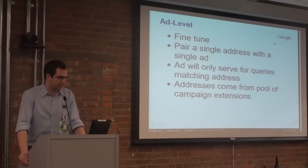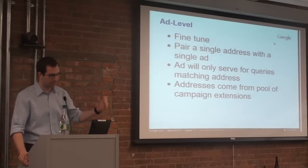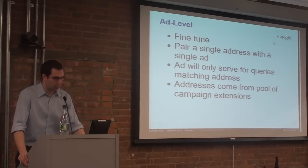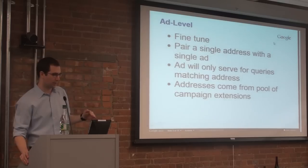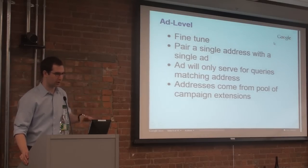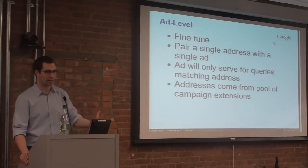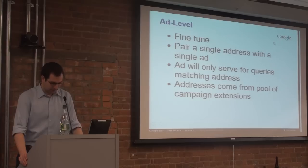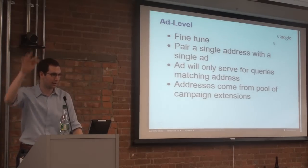You can also attach these locations specifically to one individual ad. So if you have an ad that, for example, you want to put the text Boston into, or you want to have a promotion that's only available for people in Boston, you would only want to show that ad for a specific location. In this case, you basically create what we call an ad override. That takes one of the locations that's at your campaign level, pairs it with an individual ad, and that ad will only show when the search is for that specific location. So the addresses come from a pool of campaign extensions — before you can create an individual ad extension, you need to have that campaign extension in your general pool.